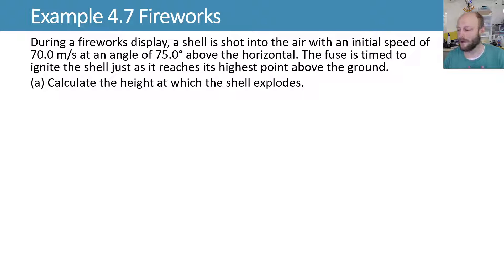Let's try working a problem. During a fireworks display, a shell is shot into the air with an initial speed of 70 meters per second at an angle of 75 degrees above the horizontal. While reading this, I'm going to go ahead and make a sketch. Here's my y and my x axes. Try and get my mind around what's going on here.